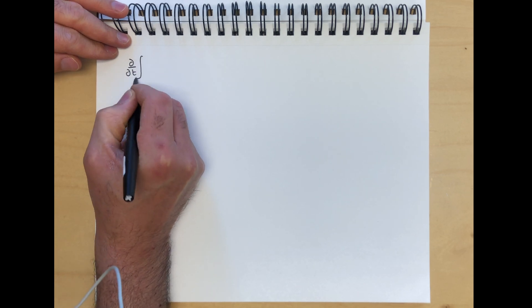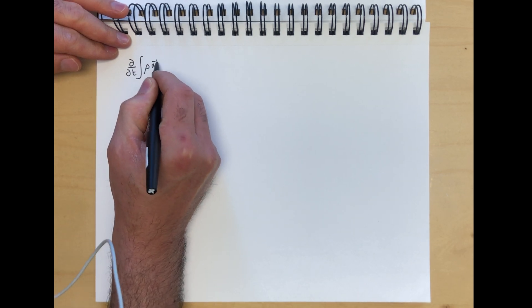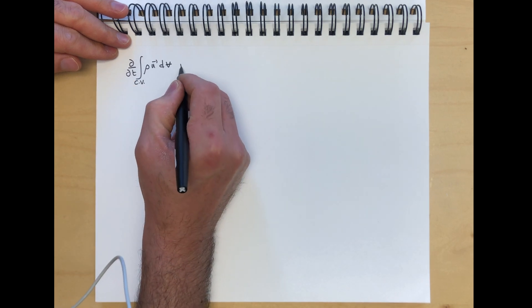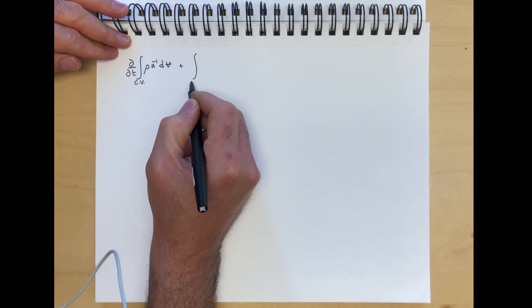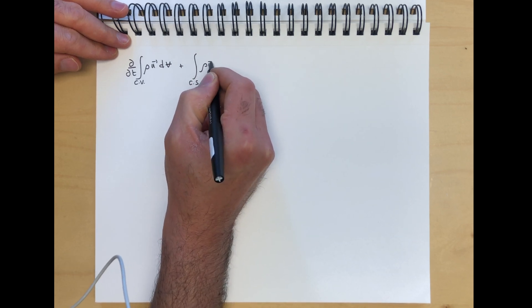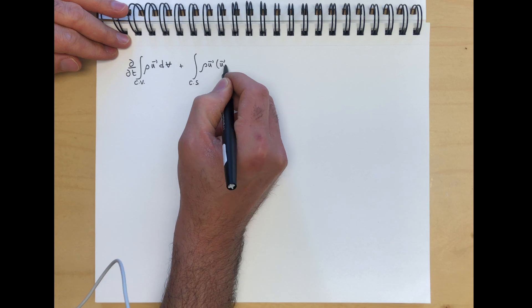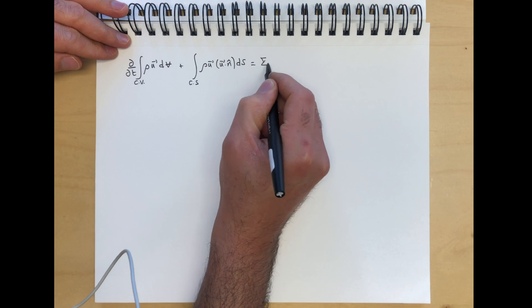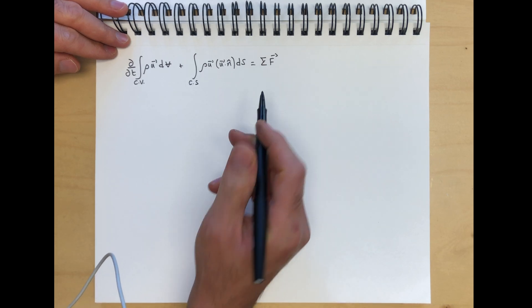Partial by partial t integral rho u dv over control volume plus fluxes integral over the control surface rho u, u dot n ds. We said that's equal to summation of external forces.